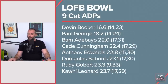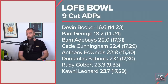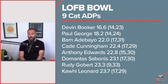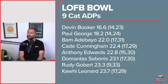Devin Booker had an ADP of 16.6, going as high as 14 and as low as 23, never falling out of round 2. Paul George had an 18.2 with a highest of 14 and a lowest of 24 — never falling out of the second round. I think he should be in the top 20.